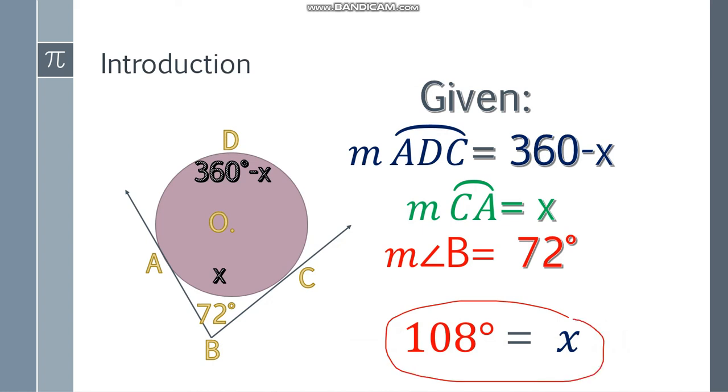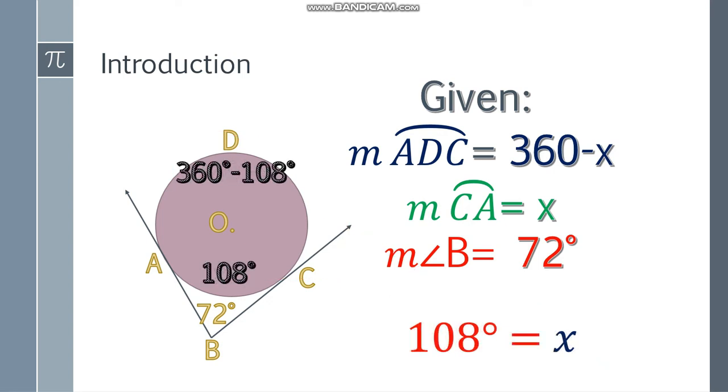However, we are not yet done, because we are asked to find the value of the larger intercepted arc. We have to substitute the value of x here. So we have 108 here, and 360 degrees minus 108 degrees, that will be 252 degrees. And there you have it. We have already solved the problem.